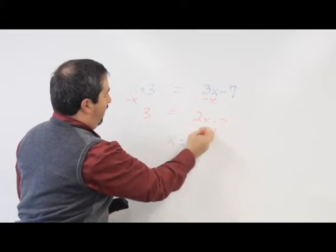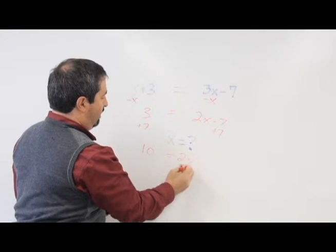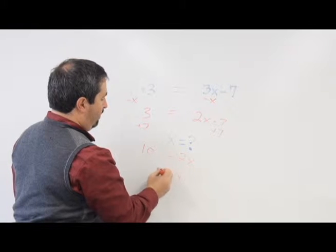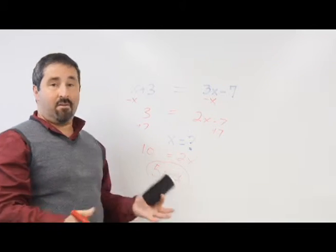Let's add 7 to both sides. 10 on this side equals 2x. x alone divided by 2 equals 5. There's your answer.